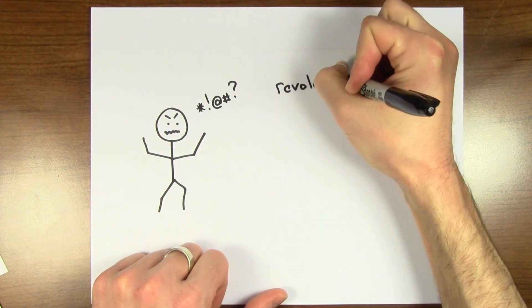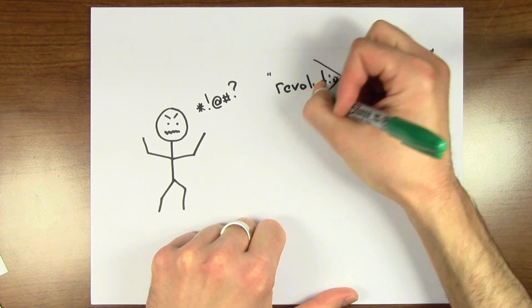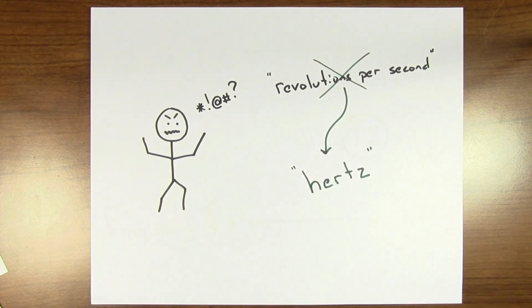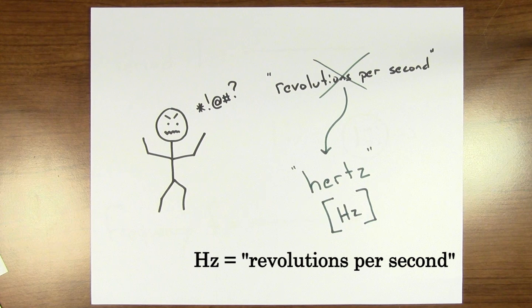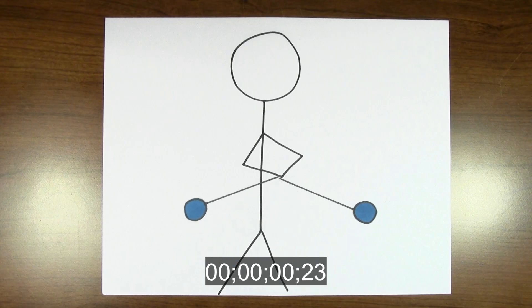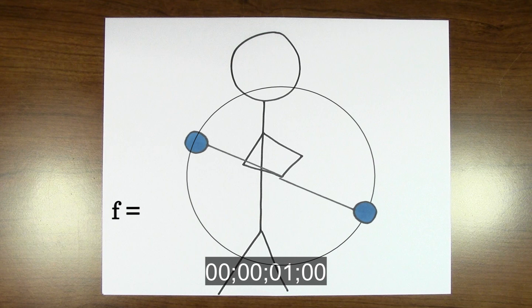People must have gotten tired of saying revolutions per second because now we use the unit hertz to stand for revolutions per second or cycles per second. So a physicist would say that this yo-yo has a frequency of 0.5 hertz.